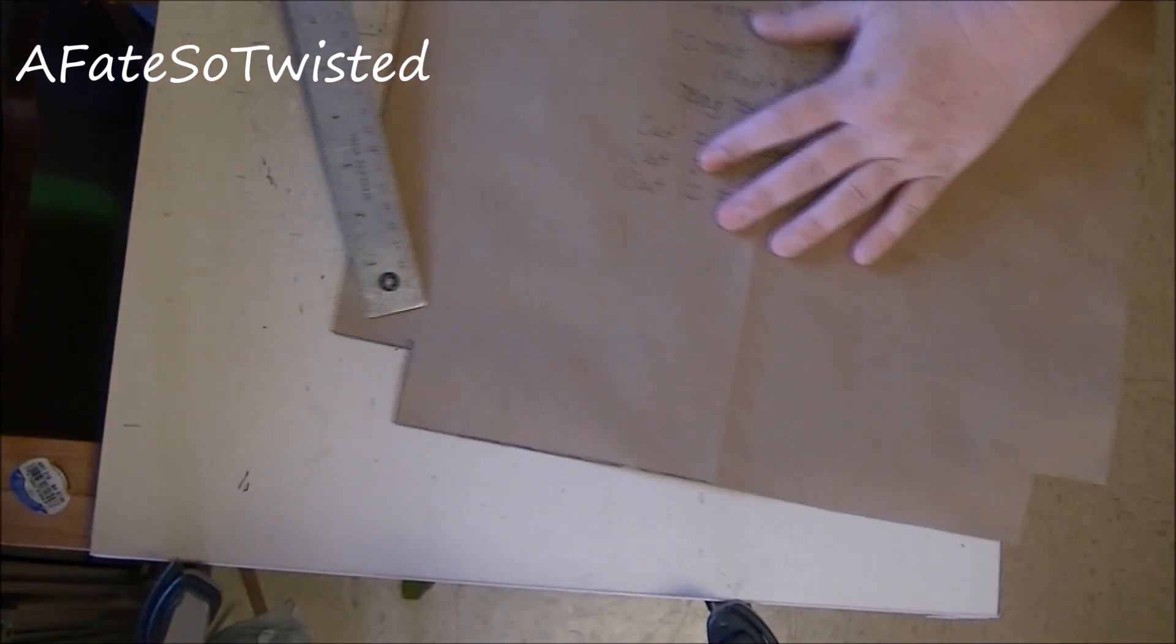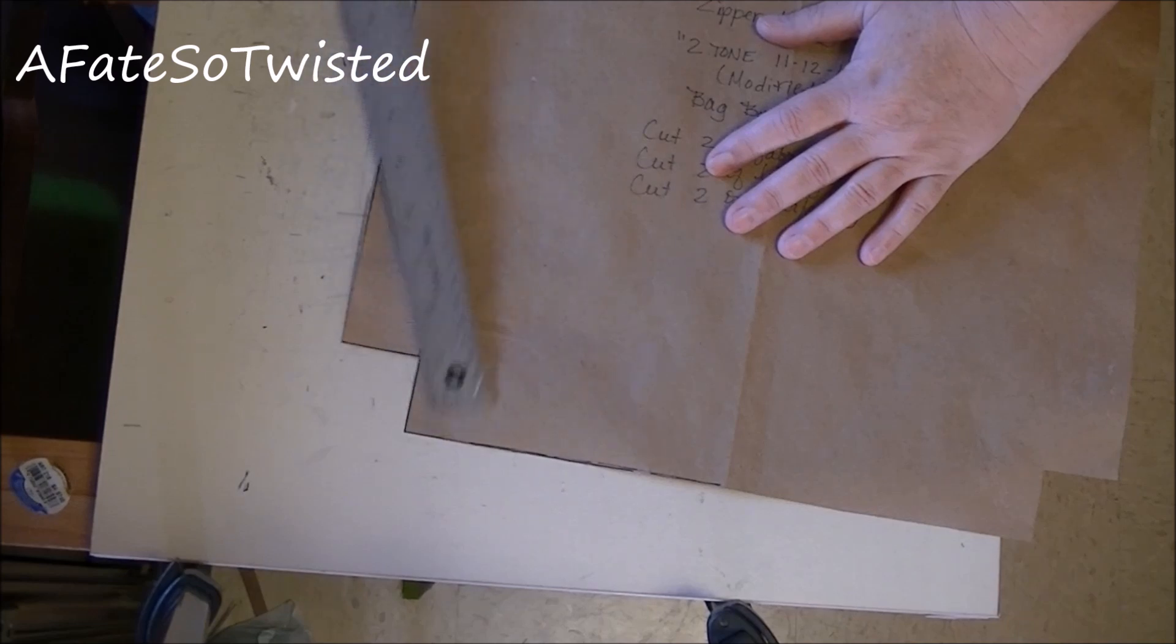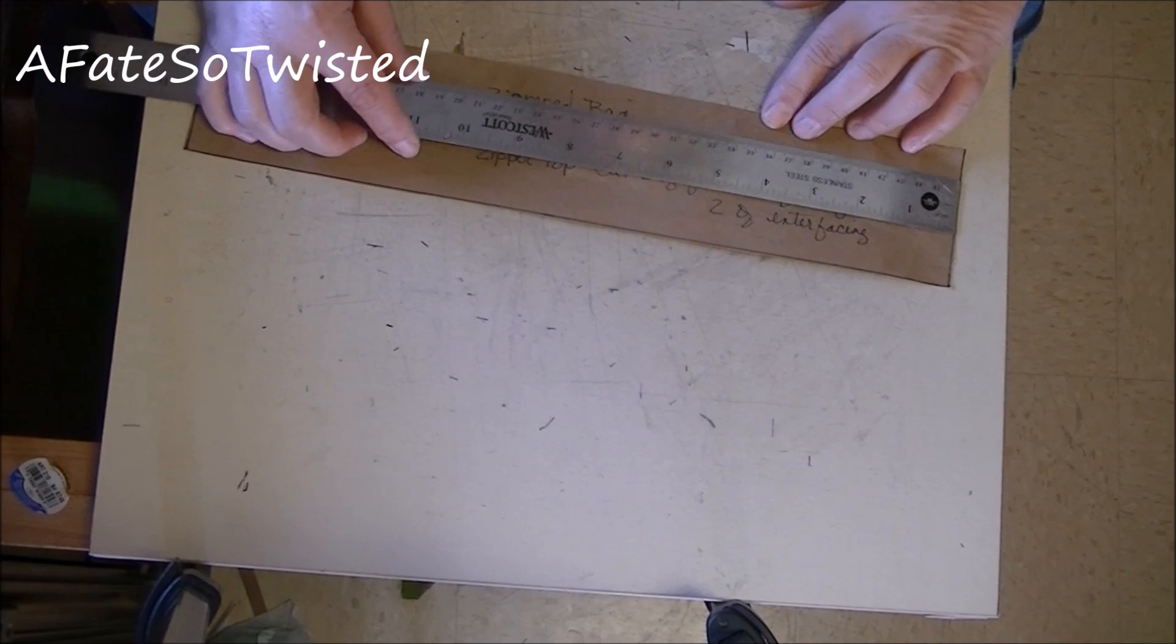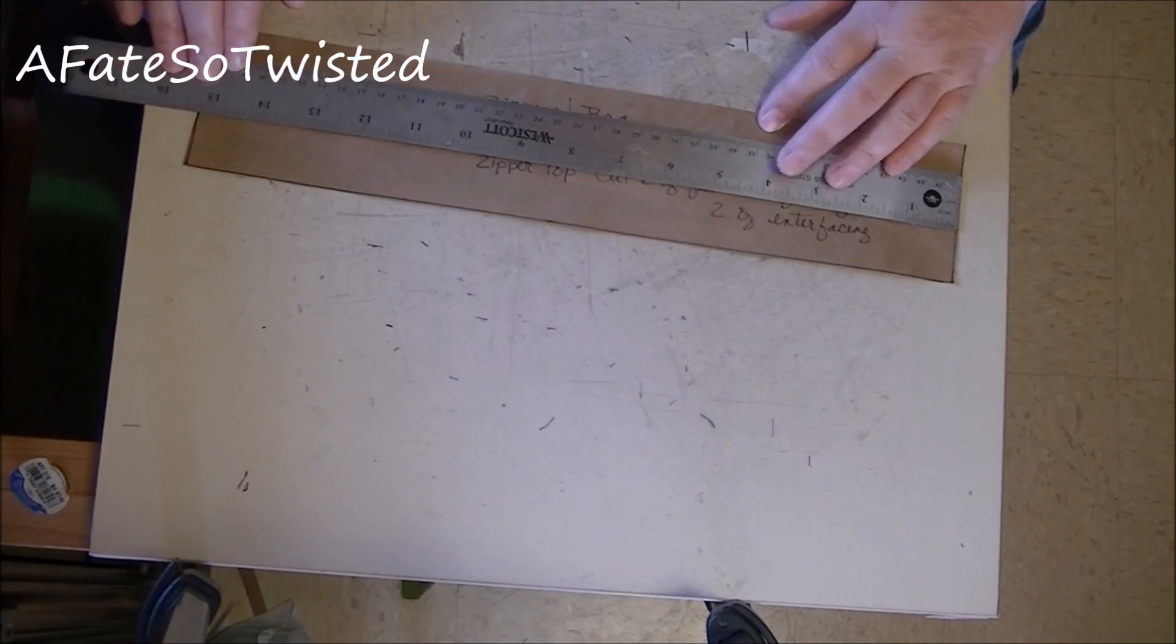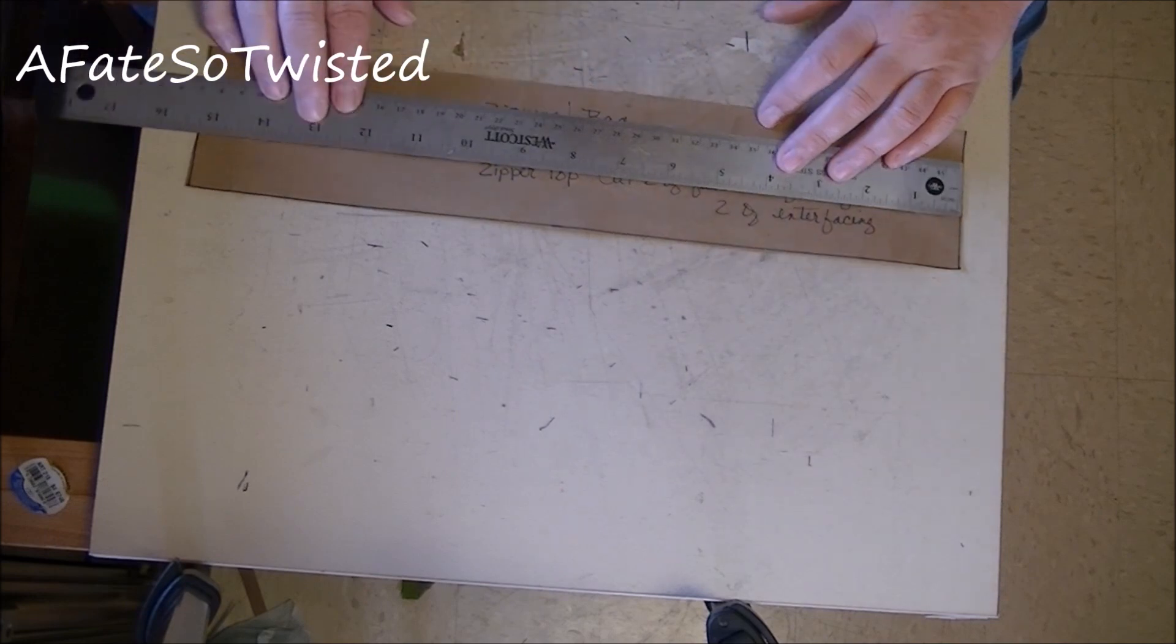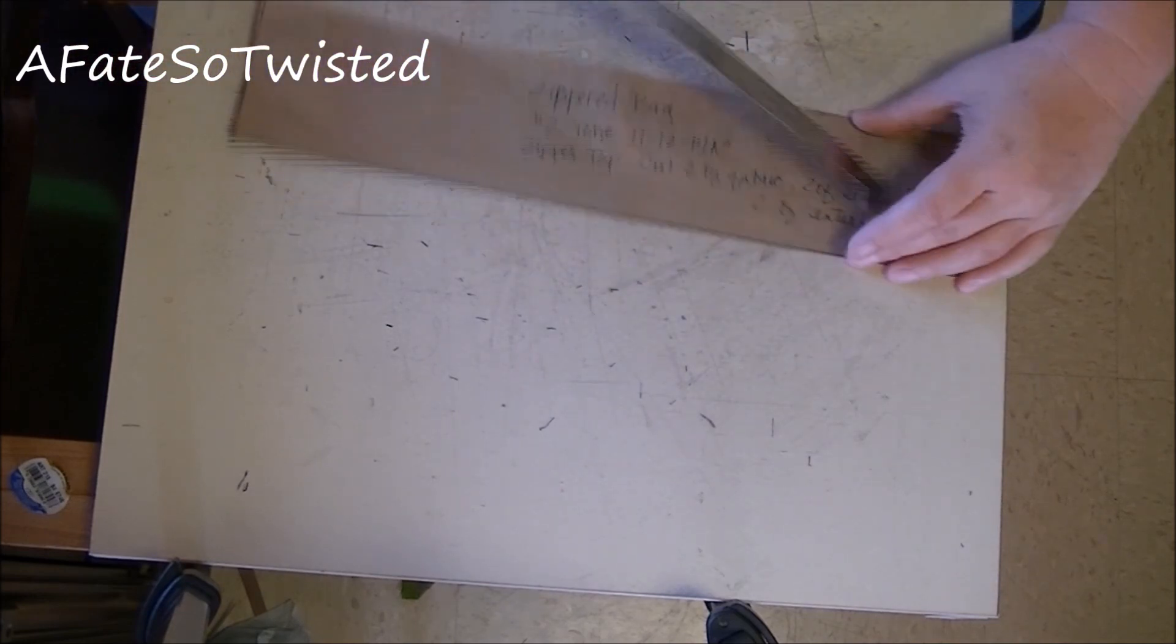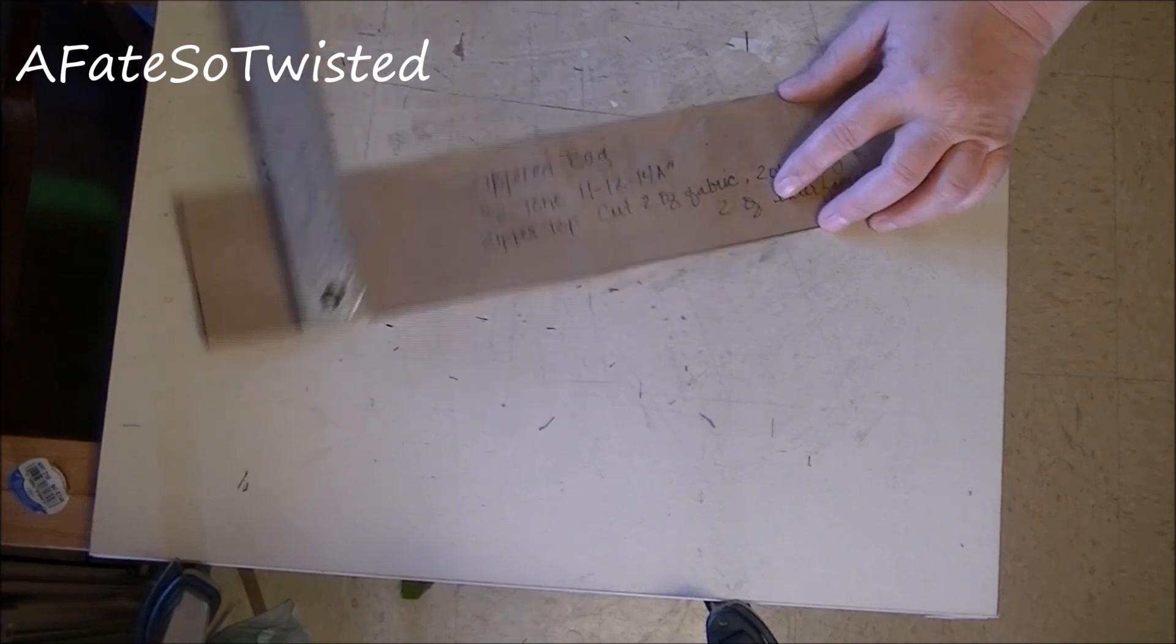And, you know, the gussets, they're an inch and a half each gusset piece here. We've got the band that we're going to use here to recess the zipper and that is the same length as the bag, which is about 15 and a half by three, by three inches wide.